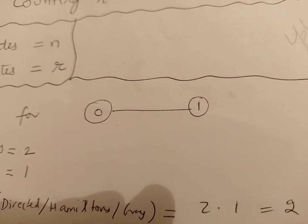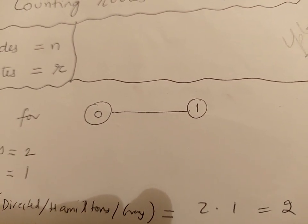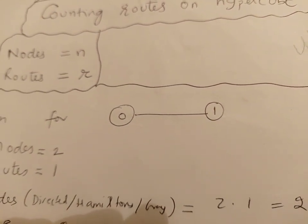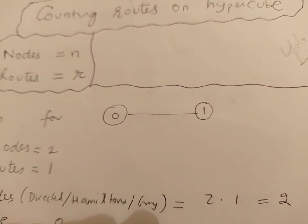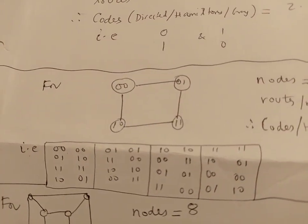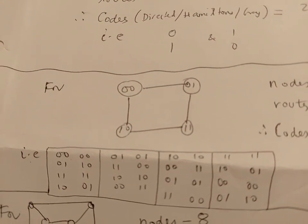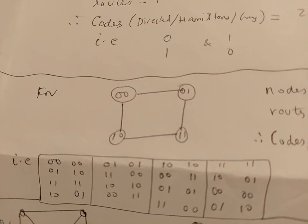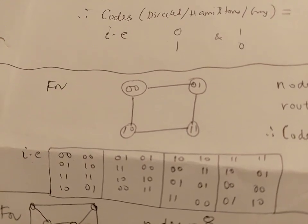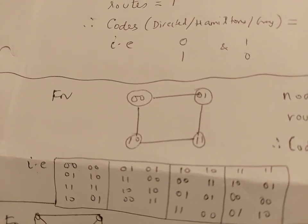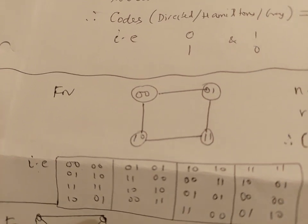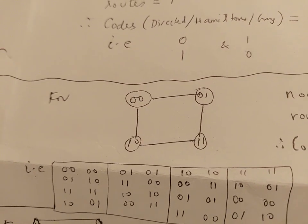So you start from 0 you reach 1, that is one path. You start from 1 reach 0, that is another path. So two paths having two nodes. Here we start from 0,0 top left node and we can reach other nodes just visiting them once and come back to the first point. That will be one Hamilton circuit, one Hamilton cycle.